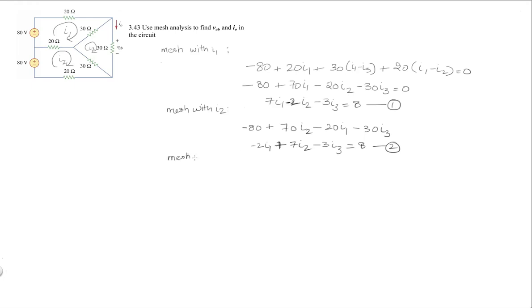And my mesh with I3 gives me an expression which is, I notice that I3 is the one so that pretty much has to be 90I3, and those are minus 30.